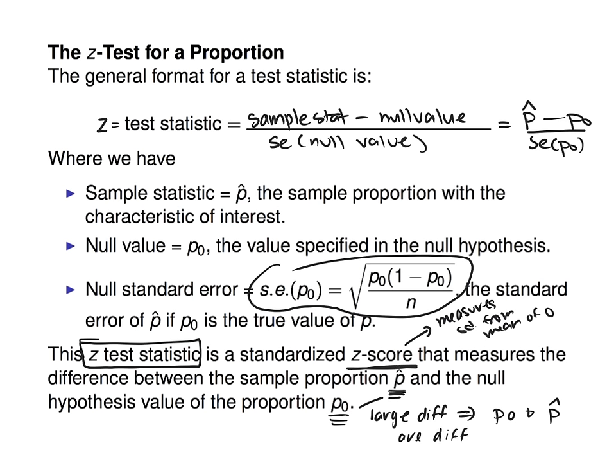A large difference between P-hat and P-naught suggests that P-naught and P — the unknown true proportion — are different. If that's the case, you can decide in favor of your alternative hypothesis.